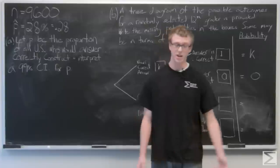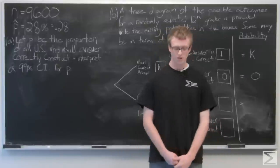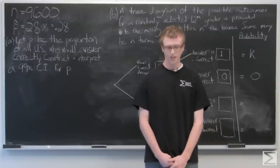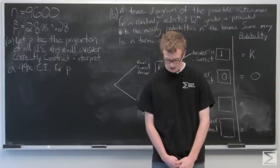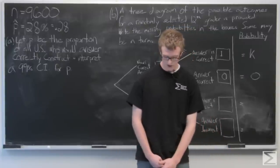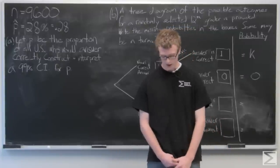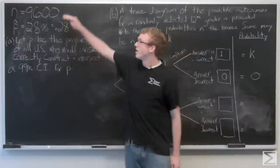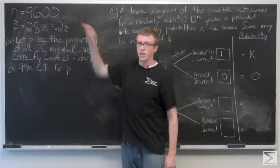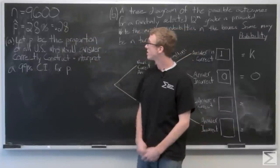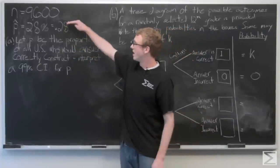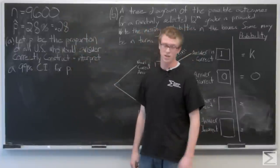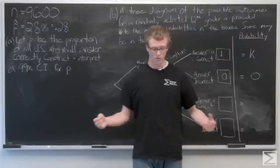Of the 9600 students who were tested, only 28 percent answered the multiple choice question correctly. So we have N equals 9600 students and P-hat equals 28 percent, which is 0.28.